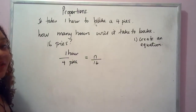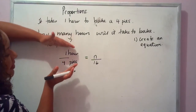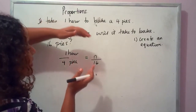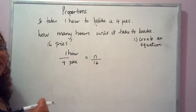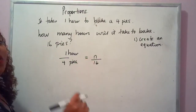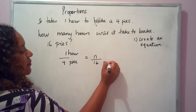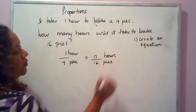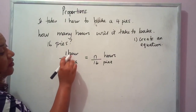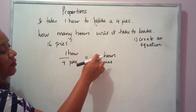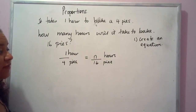We've now created an equation. The value on this side is equal to the value on that side. To solve for N, we need to establish the relationship. When you create equivalent fractions, whatever you did to the top must also be done to the bottom.